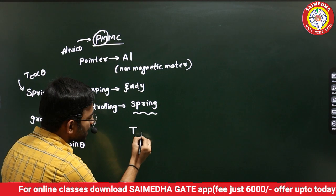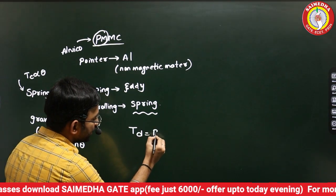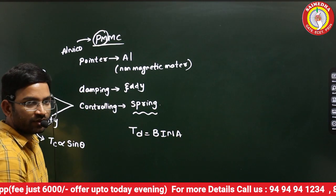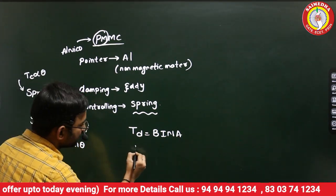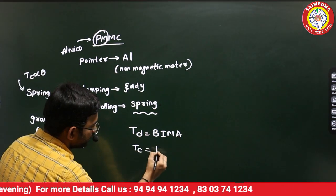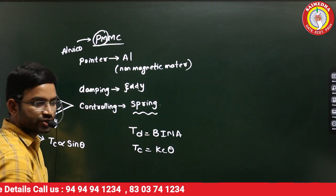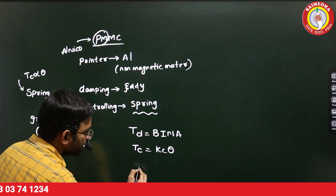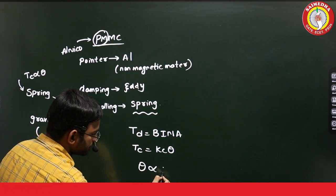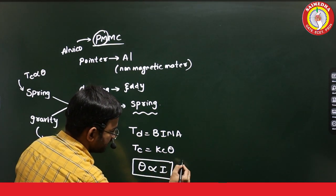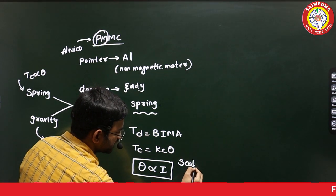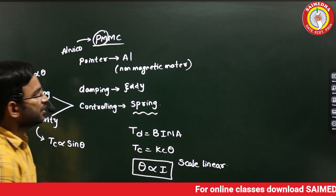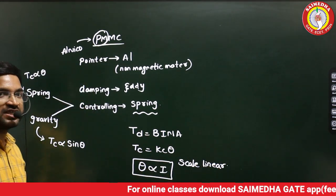The deflecting torque formula in PMMC is B into I into N into A. Controlling torque Tc equals Kc into theta. Under steady-state condition, the two torques are equal, giving theta directly proportional to I. So the PMMC instrument has a linear scale.